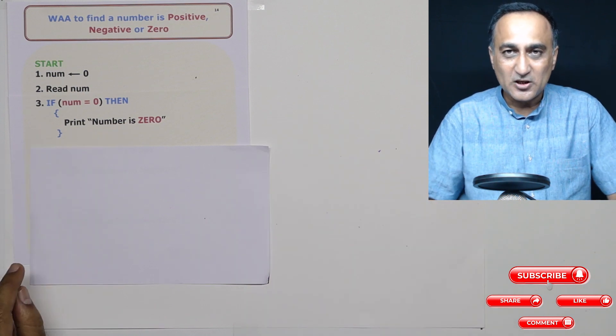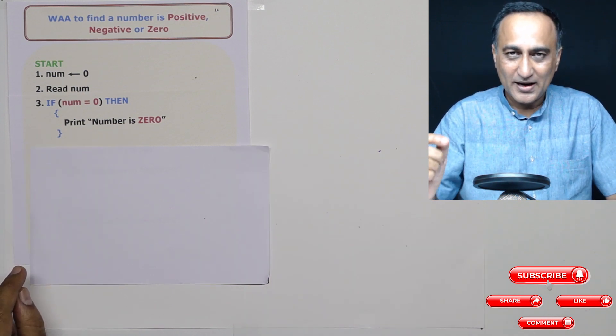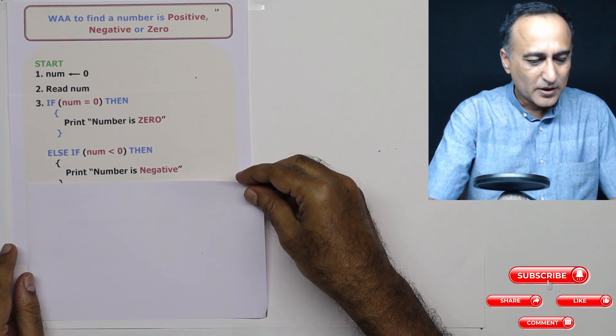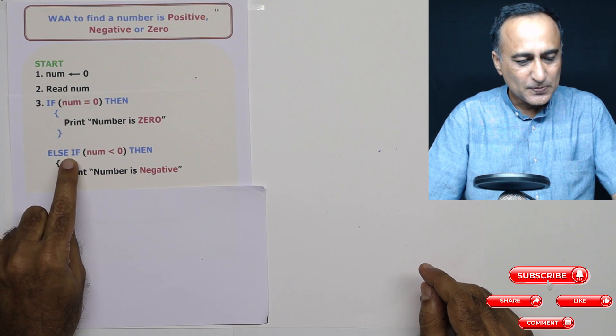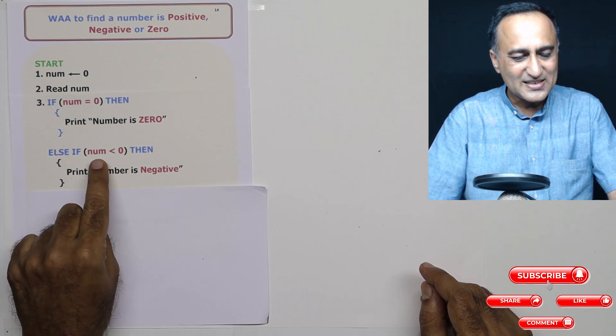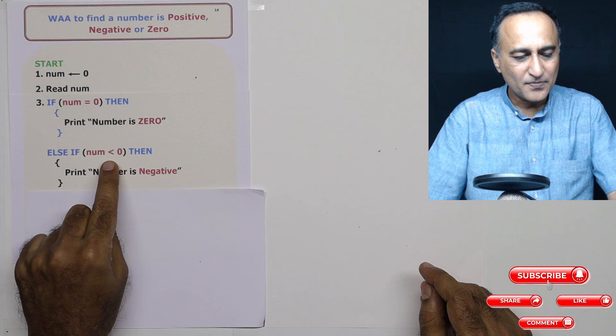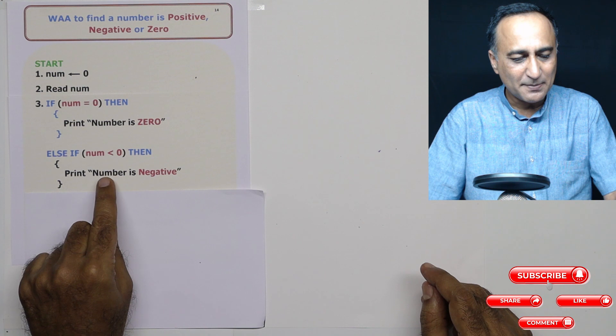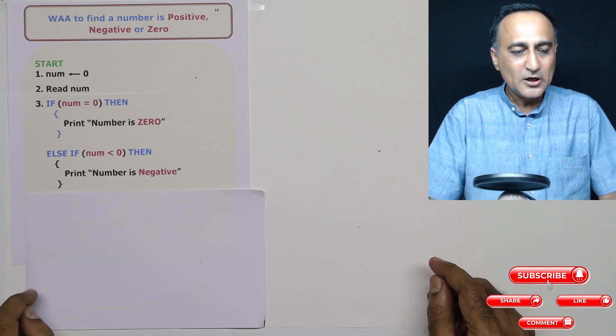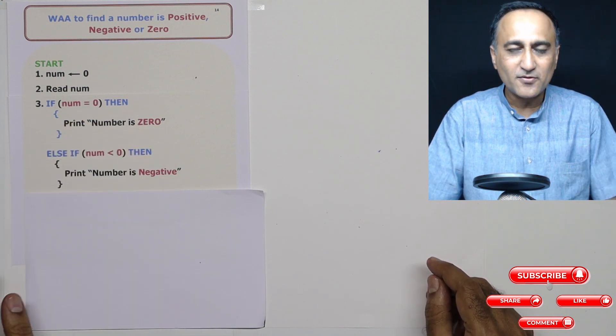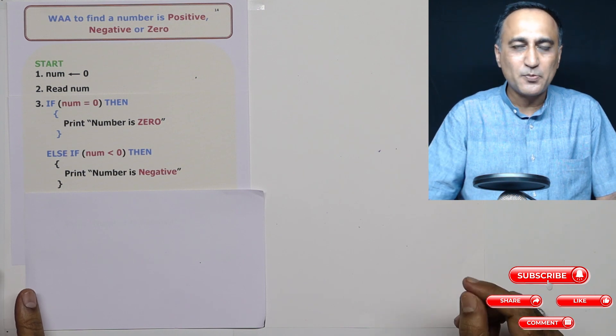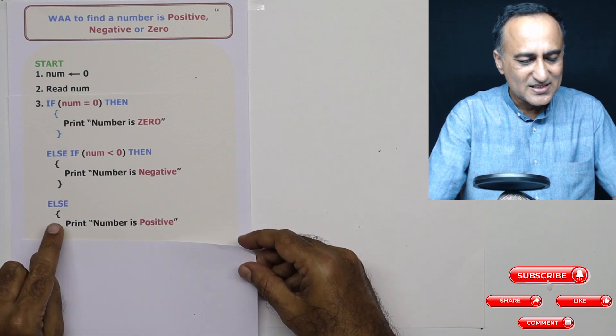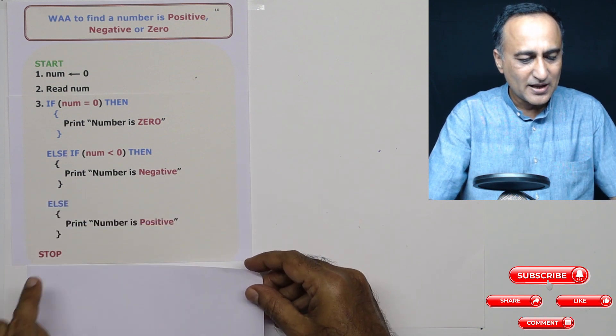Now if the number is not zero, it has to be either positive or negative only, there is no other possibility. So in the next else if, what I do is I check else if number is less than zero. If the number is less than zero, then I'm going to print the message number is negative. Now if the number is neither zero nor negative, the number must be positive and I'm not required to check this condition. So then I'm going to say else print number is positive and I'm going to stop.